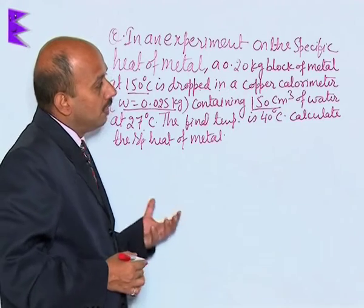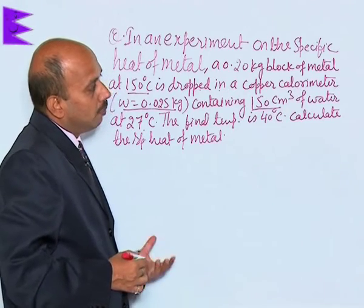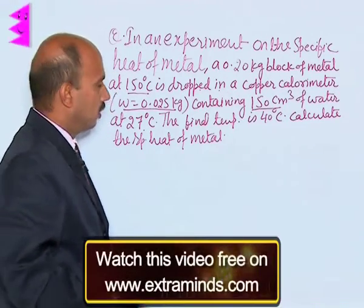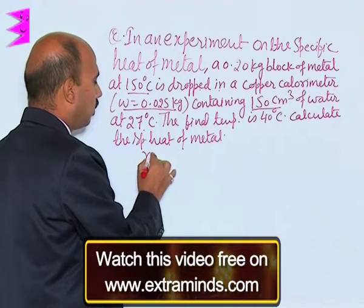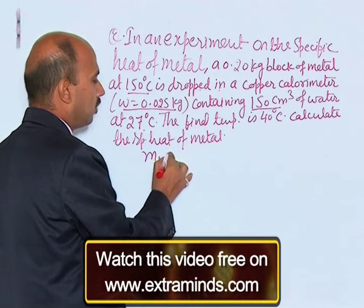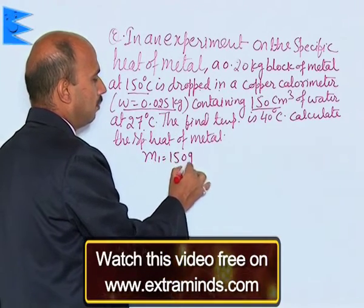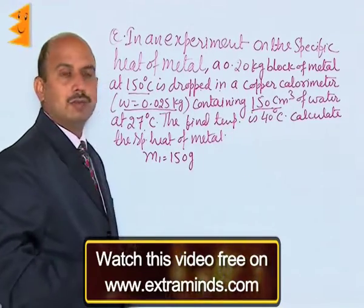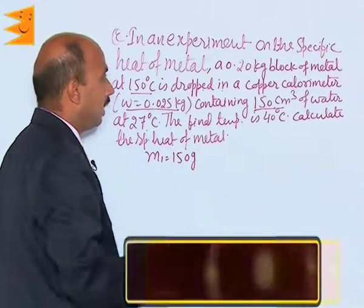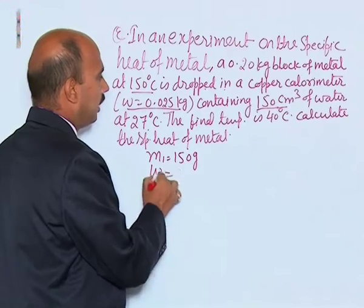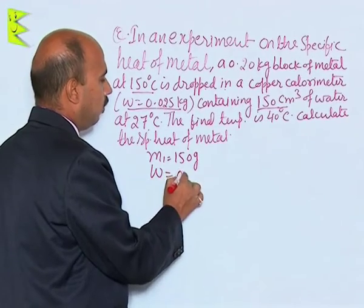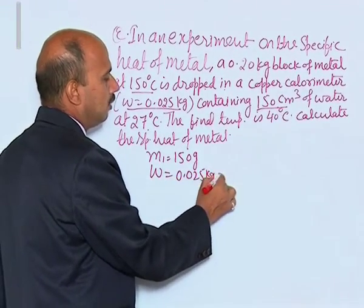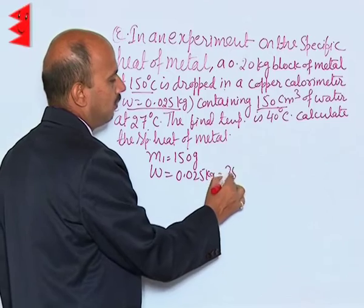In this case, you have to assume there is no loss of heat to the surrounding. We can take mass of water M1 equal to 150 grams, since volume is given, and W — the water equivalent of the calorimeter — is 0.025 kg, that is 25 grams.